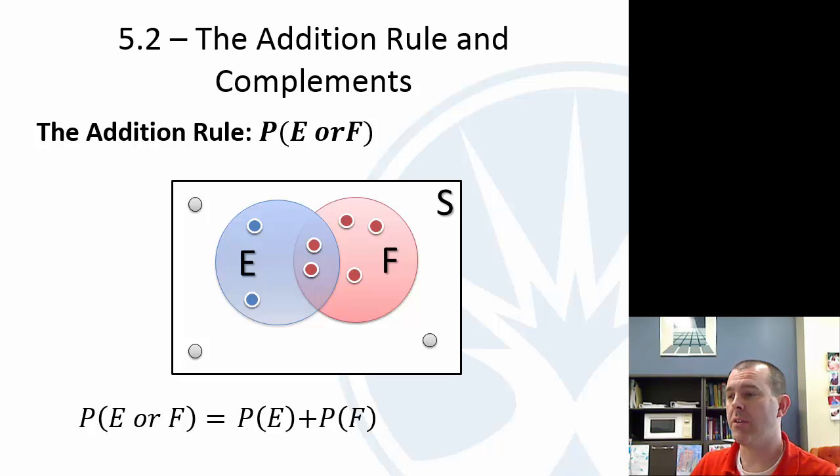But hopefully you're noticing there's a problem there, because we double counted those two in the middle. So we need to subtract those, and those are the probability of E and F.